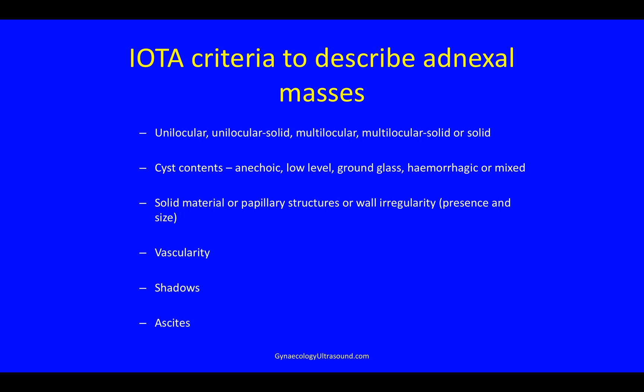A mass would be described in terms of its locularity, whether or not there's solid material, the cyst contents, whether there's solid material and whether this is a papillation, vascularity, shadows, and ascites.